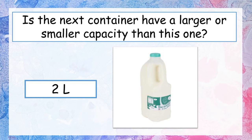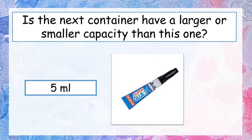One last one — if you're still with me, hang in there, only one left to get right. We're on 2 litres. Do you think the next container is going to be a smaller or larger capacity? Pause the video and write down your answer. Our final container is this super glue container and it's smaller at 5 millilitres. If you got all of them all the way to the end, well done — you are definitely ready for today's lesson.